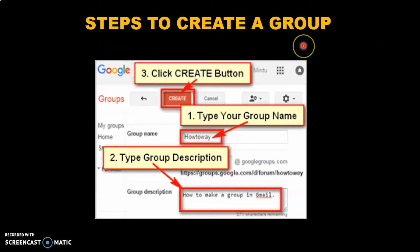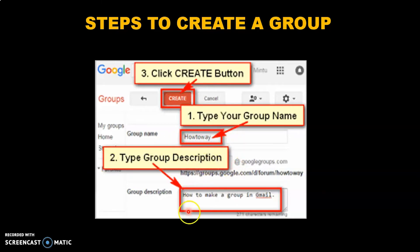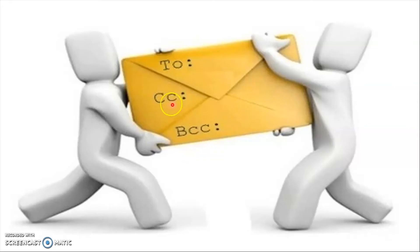Now we are going to see the steps to create a group. First, you have to type the group name — for example, 'Seventh Standard Students' — and then the group description. You can give any description about the group, and then click the Create button. Once you click Create, the group gets automatically created.